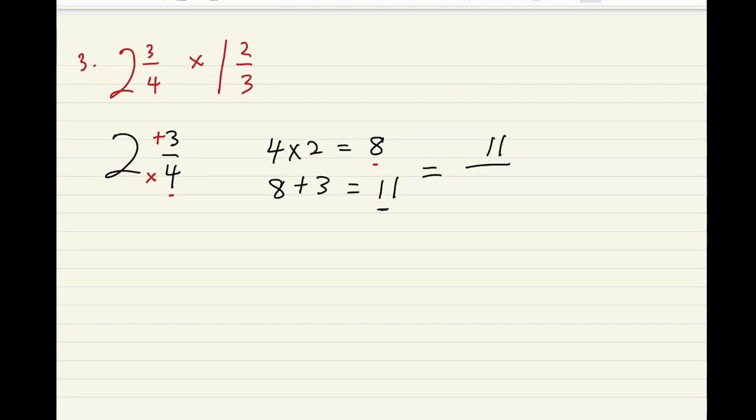So 11, and then your bottom number becomes 4. You're gonna put the same number from the question back here, so it becomes 11 out of 4. That means we've changed the first one into an improper fraction.